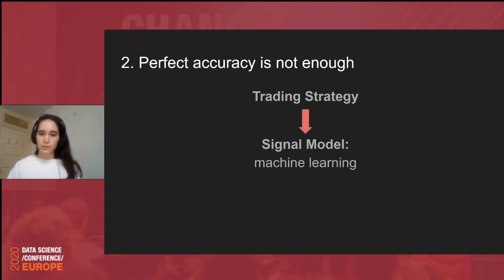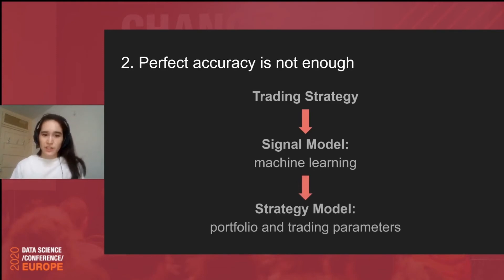So, we might develop a machine learning model to label the sentiment of Elon Musk tweets. And we will continuously run his tweets through our model in order to determine if there's a strong signal or a strong indication that Tesla stock will go up. So, we have our signal. The next part of the trading strategy problem is to develop what we call or what I call a strategy model.